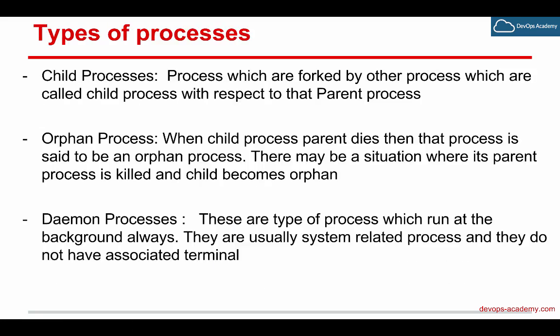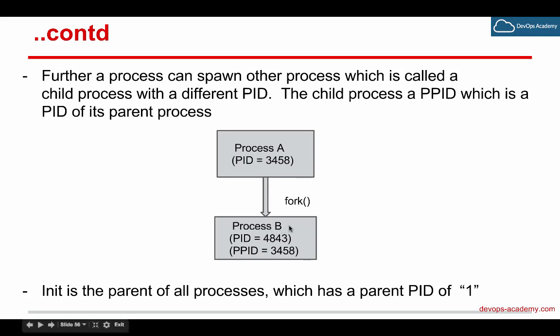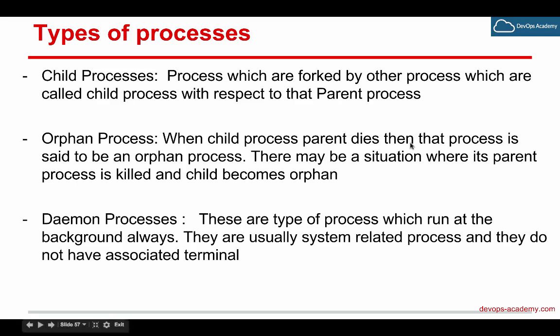Orphan processes: when a child process's parent dies, that child process is said to be an orphan process. In our example, if process A — the parent of process B — dies, then process B is called an orphan process. There may be scenarios where a parent process is killed and its child becomes an orphan.